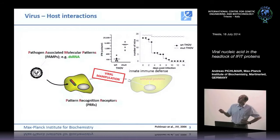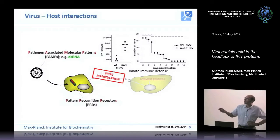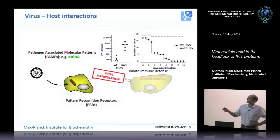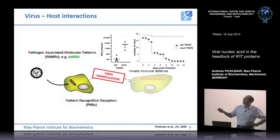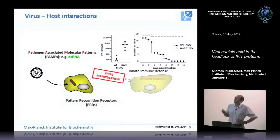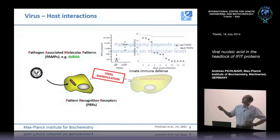One example is an orthomyxovirus called Dogota virus, very similar to influenza virus. In its wild-type form, this virus induces only miniscule amounts of type 1 interferon in an infected mouse model and is highly pathogenic. But if this virus is mutated at a single amino acid on segment 6, it gives rise to high amounts of type 1 interferon in vivo and the mice are completely protected.